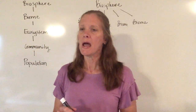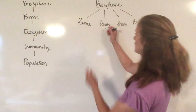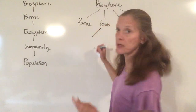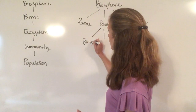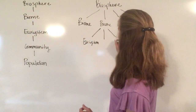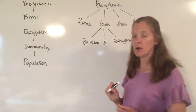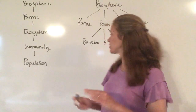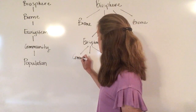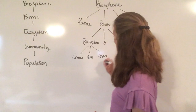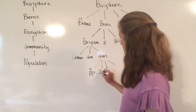Each biome is then going to be broken down into ecosystems — I'm just going to take one biome here, although they would all be done this way — and then you're going to break your biome down into ecosystems. Then each ecosystem from there is broken down into several different communities, and then each community is going to have a number of different populations in it.